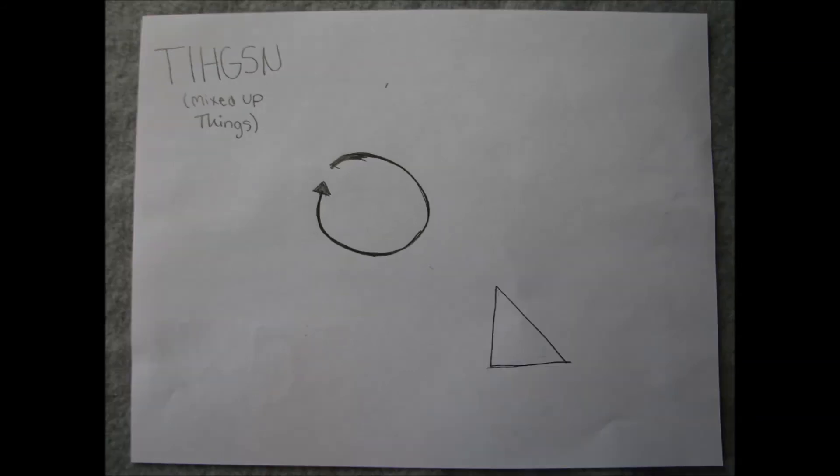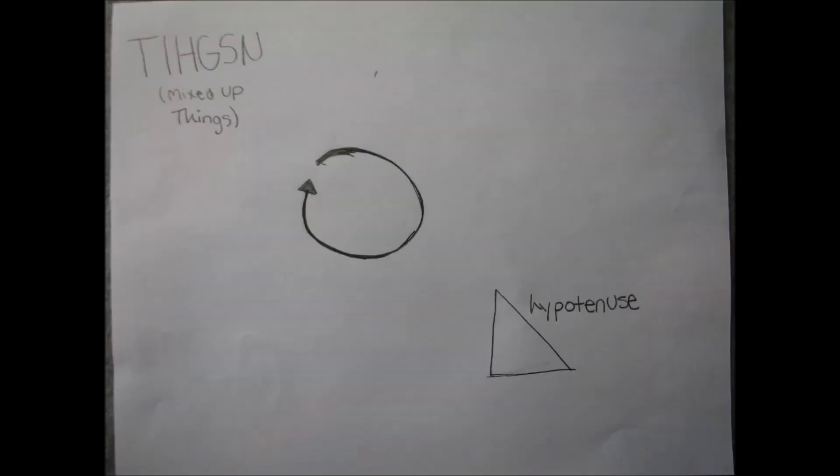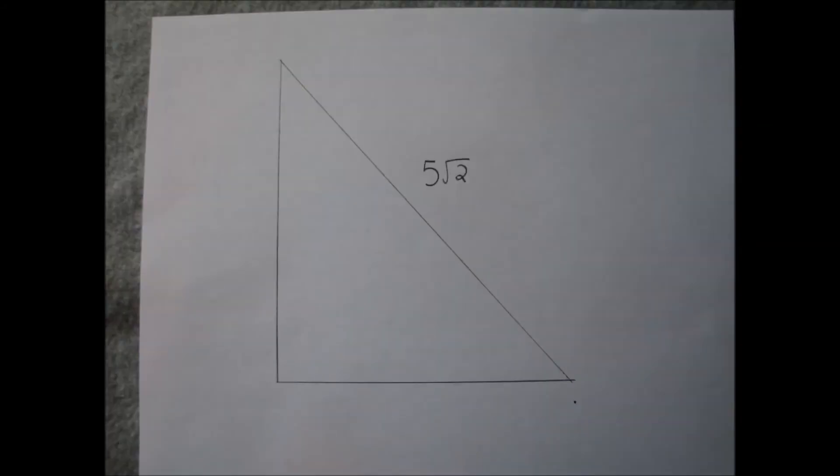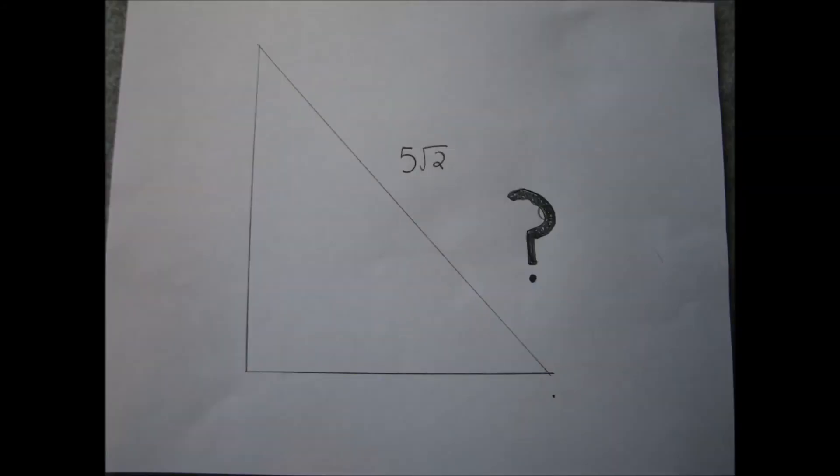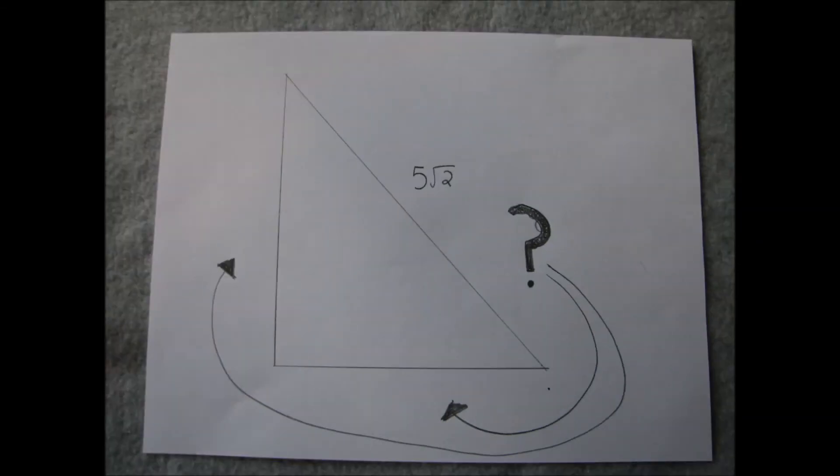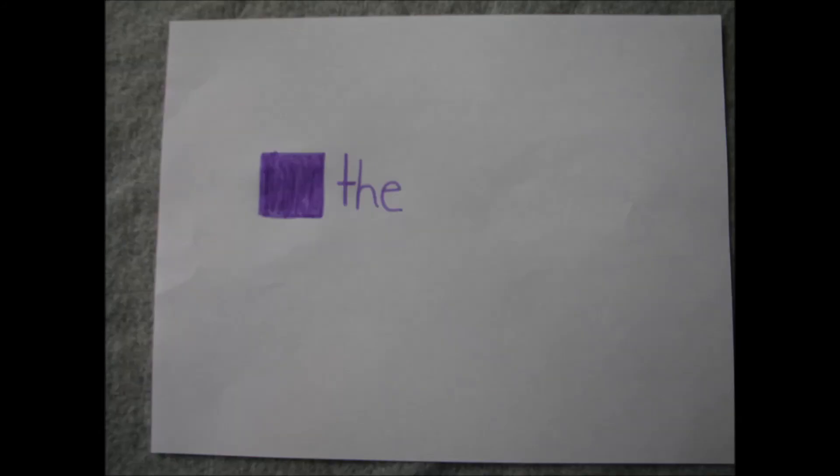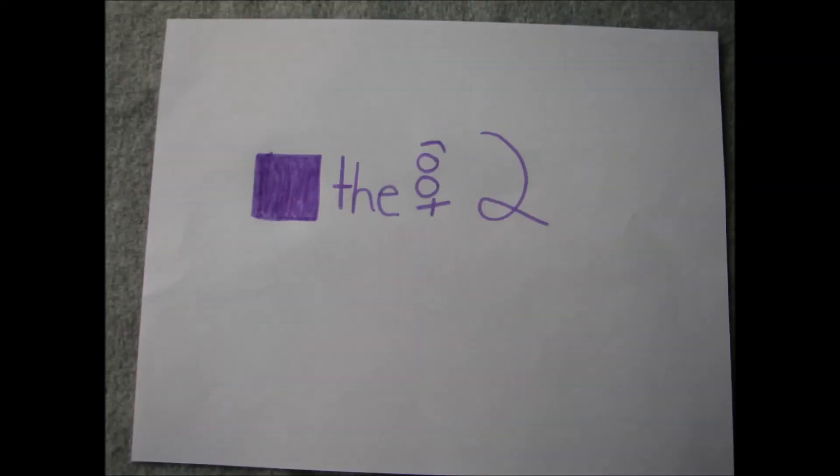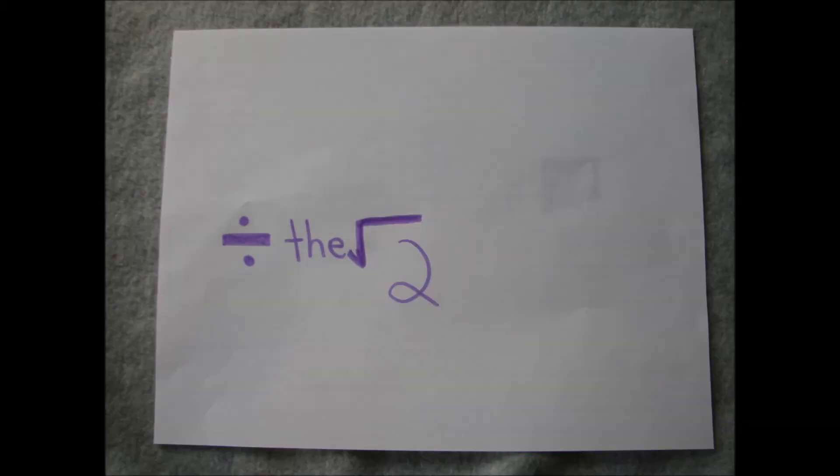And give the hypotenuse. Let's say it's 5 root 2, so how do you find the leg lengths? Divide by square root 2, divide by root 2.